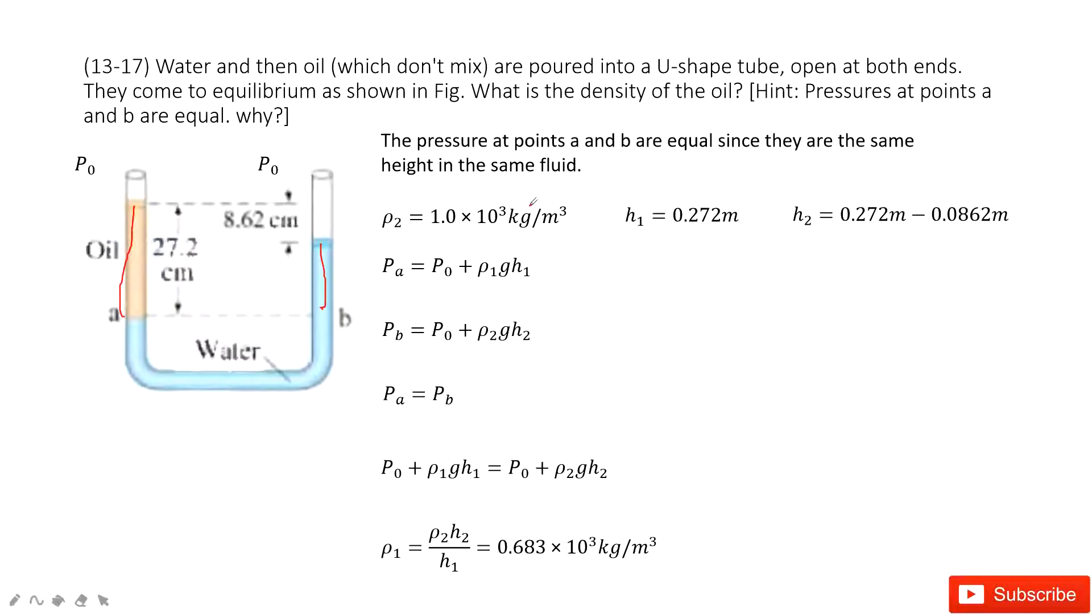Now we find the pressure at points A and B must equal. This is from the height. Why? Because they have the same height in the same fluid, ρgh. We take this part as the reference point. The H, both of them are water. So ρgh, A and B are equal.